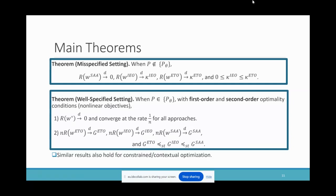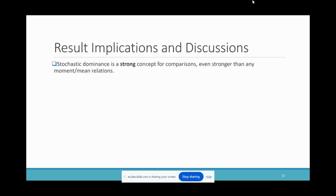With additional technical efforts, these results also hold in constrained optimization and contextual optimization. Our results provide a strong comparison in the first-order stochastic dominance sense, implying relations on any moment including the mean — and in fact even stronger than that. Our results are asymptotic, but we will also see in experiments that the same trends hold in reasonable finite sample regimes.